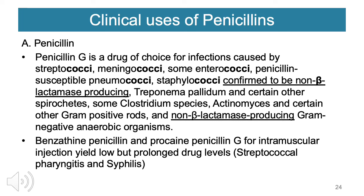Penicillin G is the drug of choice for infections caused by streptococci, meningococci, some enterococci, penicillin-susceptible pneumococci, and non-beta-lactamase-producing staphylococcal infections. Treponema pallidum (causative agent of syphilis), other spirochetes like Lyme disease, some Clostridium species, actinomyces, certain gram-positive rods, and non-beta-lactamase-producing gram-negative anaerobic organisms are also covered. Benzathine penicillin and procaine penicillin are given via IM with slow release, yielding low but prolonged drug levels — useful for streptococcal pharyngitis and syphilis.